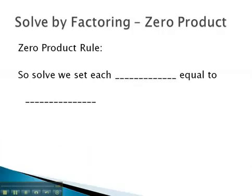What the zero-product rule says is that if you're multiplying two factors and the answer is 0, the only way that's possible is if either the first factor, a, equals 0 or the second factor, b, equals 0.